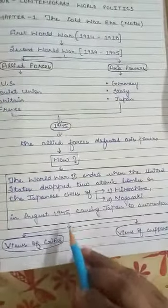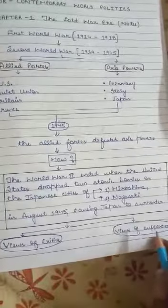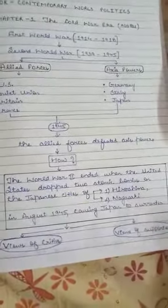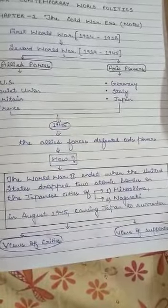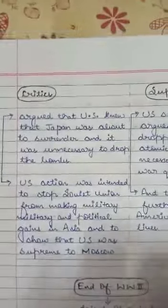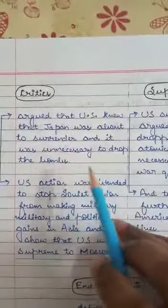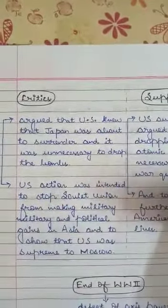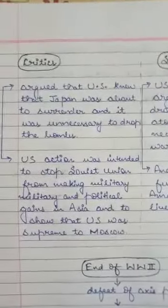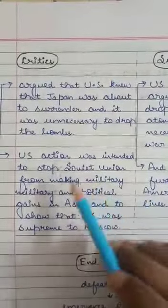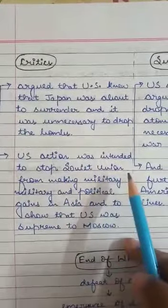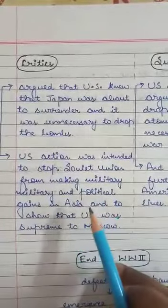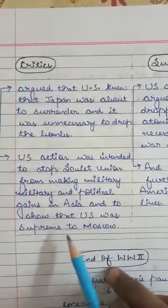There are two views regarding the US dropping atomic bombs on Japan — the critics and the supporters. The critics said that Japan was already about to surrender, so it was unnecessary to drop the bombs, which caused a great loss of human life. The second critique was that the US action was intended to stop the Soviet Union from making military and political gains in Asia, and to show that the USA was supreme over Moscow.